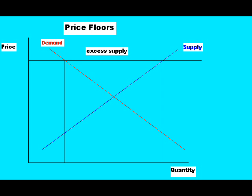Now I will discuss price floors. They are pretty much the opposite of price ceilings. They are set above the equilibrium price, with the purpose of protecting the producer. It is a price that they can be certain of receiving for their output, but an economist would generally disagree with this also, because they cause excess supply in the market.